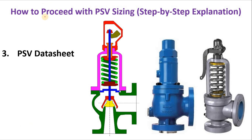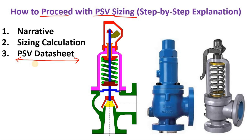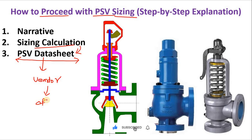In this video we are going to discuss how to proceed with PSV sizing. When we go to the vendor for PSV procurement, we send the process data sheet. But to prepare the process data sheet there are two other steps as well. First we define the basis and prepare the narrative, describing the PSV and defining the design basis. After that we perform the calculation, and whatever results we get we reflect those values in the process data sheet, which then goes to the vendor who provides an offer.